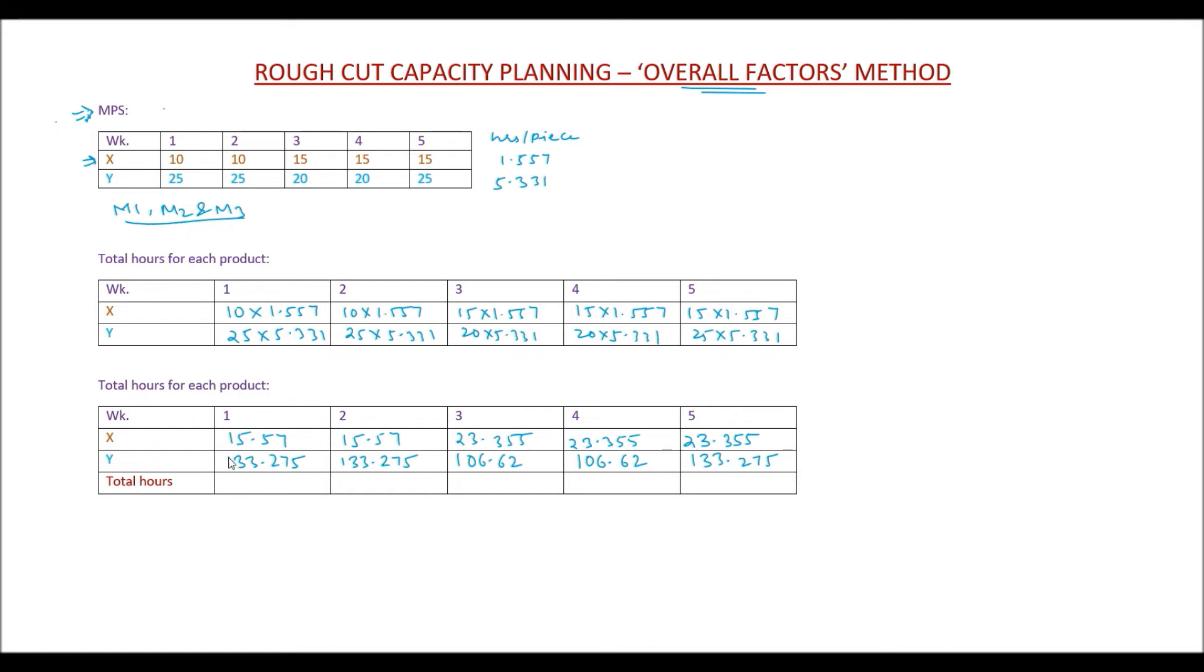Since both these products use M1, M2, and M3, let's total up the hours required on M1, M2, and M3. Basically, 15.57 plus 133.275, so this becomes 148.845. As you can see, I have totaled up the number of hours for all the subsequent weeks as well.